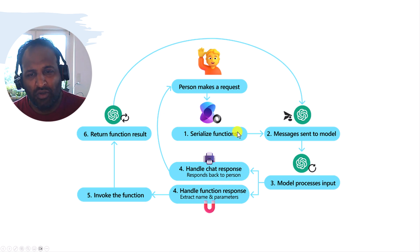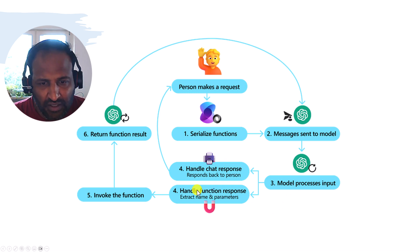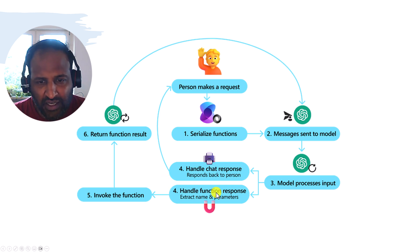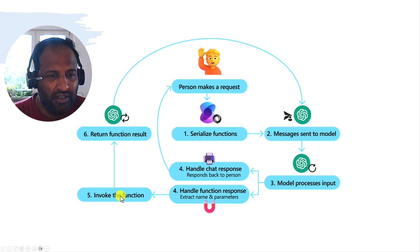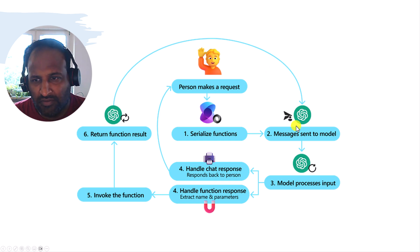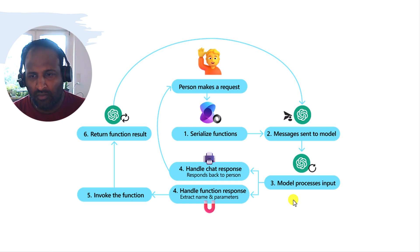So far we've seen a lot of auto implementation of function calling. In this video I'm going to focus on how to implement it the manual way. The idea is: we check the model response, send it to the user, then check if any function response is available. If so, we manually invoke the function and send the result back to the model.